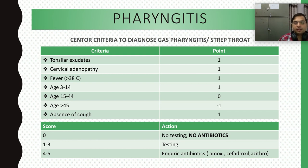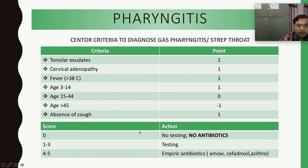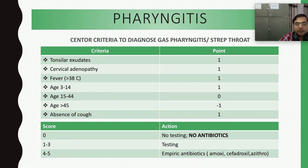Absence of cough is also considered as positive one point. If the cumulative score is zero, we don't do any testing and don't give antibiotics — we just give supportive treatment such as betadine gargles, salt water gargles, or antiparretics. If the score is one to three, we do testing.